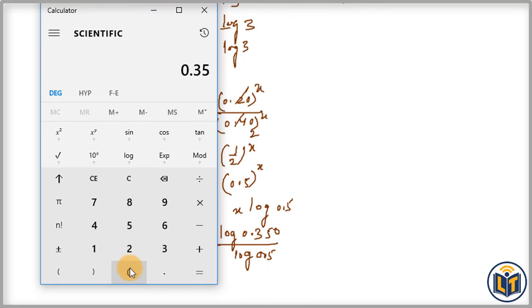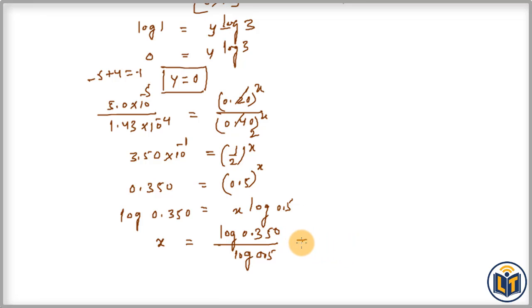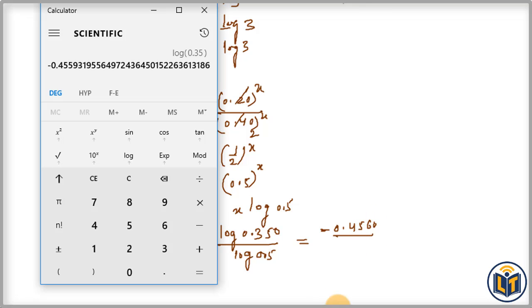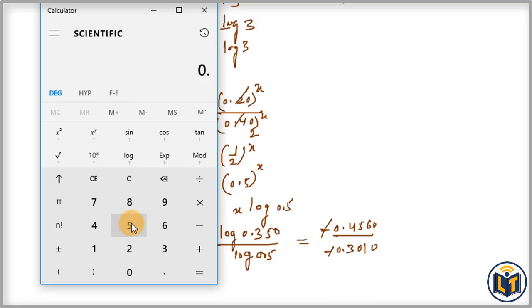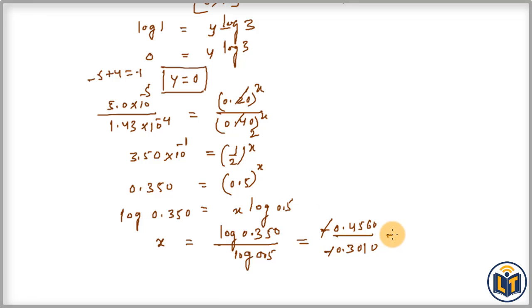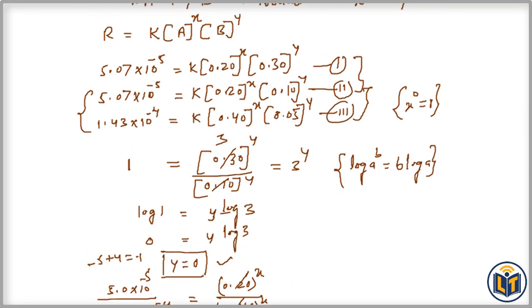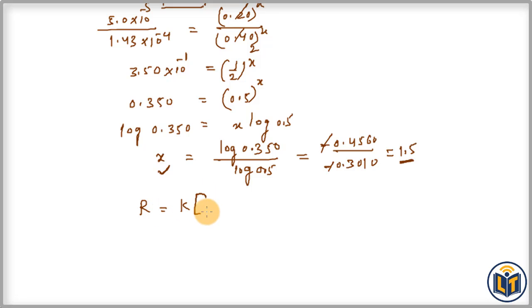Plugging in the log values: log 0.350 = −0.4560 and log 0.5 = −0.3010. The two negatives cancel, giving X = 0.4560 / 0.3010 = 1.5. So X = 1.5, which is a fractional order of reaction. Substituting X and Y into the rate law expression, we get: Rate = K · [A]^1.5 · [B]^0.